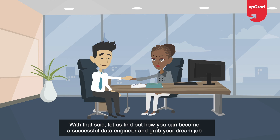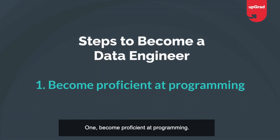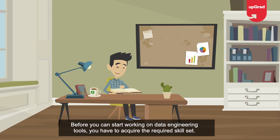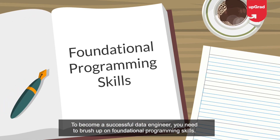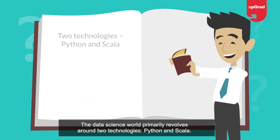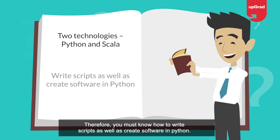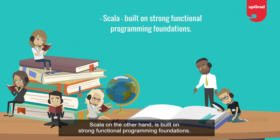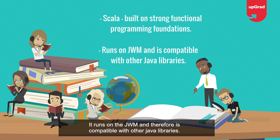Step one: become proficient at programming. Before working on data engineering tools, you need to acquire the required skill set. You need to brush up on foundational programming skills. The data science world primarily revolves around Python and Scala. You must know how to write scripts and create software in Python. Scala is built on strong functional programming foundations, runs on the JVM, and is compatible with other Java libraries.